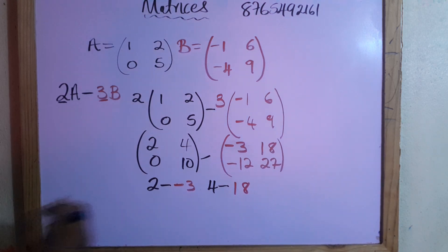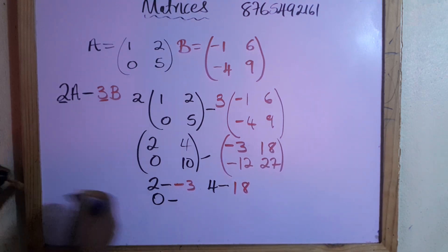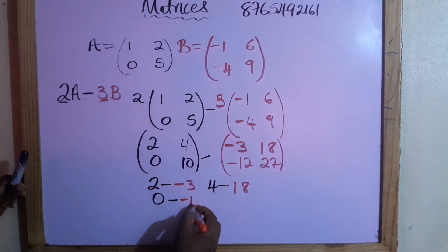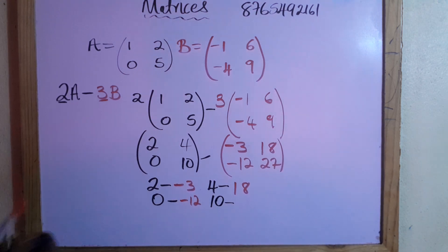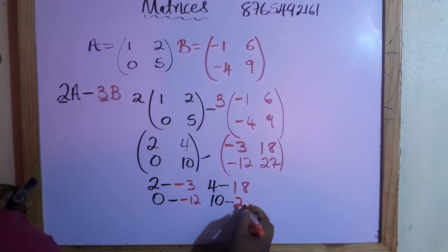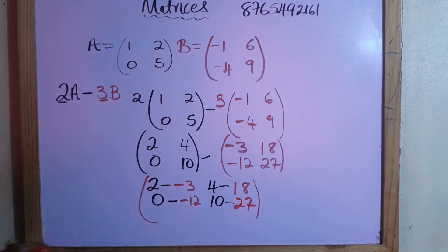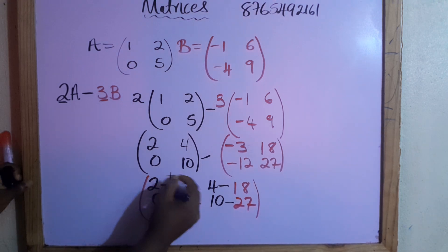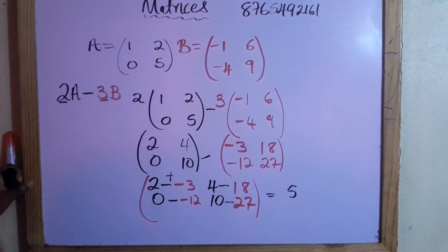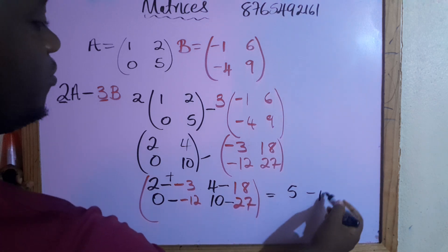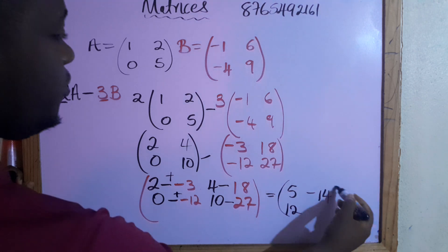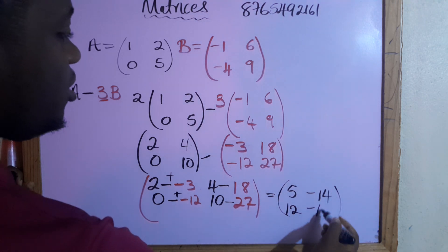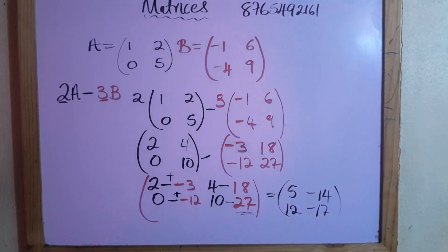Now applying the subtraction rule — matching corresponding positions: two minus negative three becomes two plus three which is five; four minus eighteen is negative fourteen; zero minus negative twelve becomes positive twelve; ten minus twenty-seven is negative seventeen, since twenty-seven is bigger it takes the negative sign.